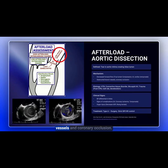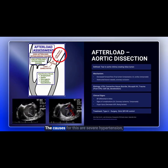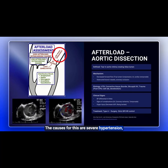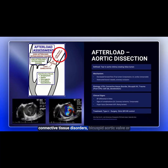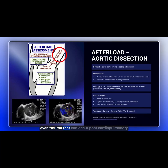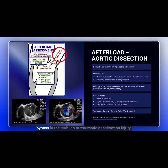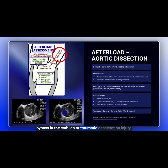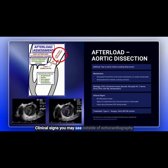Additional complications include obstructed branch vessels and coronary occlusion. The causes of aortic dissection include severe hypertension, connective tissue disorders, bicuspid aortic valve, or trauma — which can occur post cardiopulmonary bypass, in the cath lab, or from a traumatic deceleration injury.